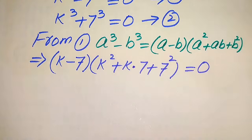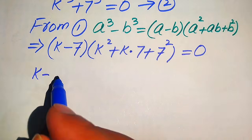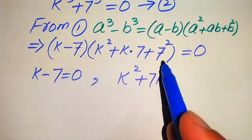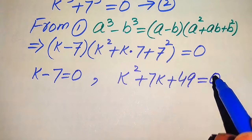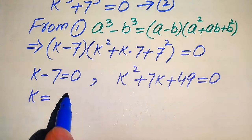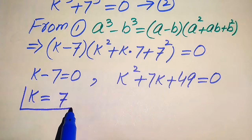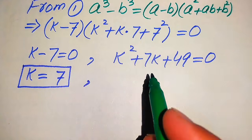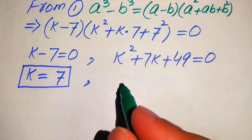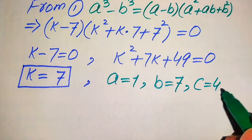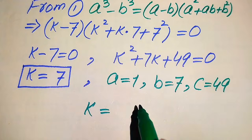After applying the cubic formula to equation 1, we get: k minus 7, times k squared plus 7k plus 49, equals 0. We divide this into two cases. Case 1: k minus 7 equals 0, giving k equals 7 — this is the first real root. Case 2: k squared plus 7k plus 49 equals 0 — we solve this quadratic equation using the quadratic formula, with coefficients a equals 1, b equals 7, and c equals 49.